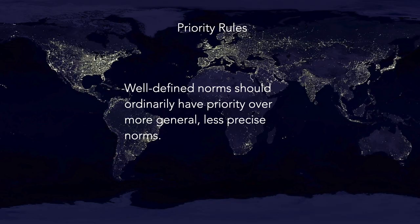Fifth: where multiple conflicting norms are involved, patterns of consistency among the alternative norms provide a basis for prioritization — if one set of norms is consistent and well worked out and another seems contradictory and confusing, go with the consistent one. And sixth: well-defined norms should ordinarily have priority over more general and less precise norms. We're going to try to specify norms in particular situations, and if something's more specific, go with the more specific norm.